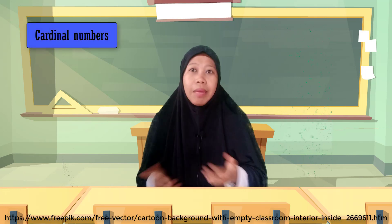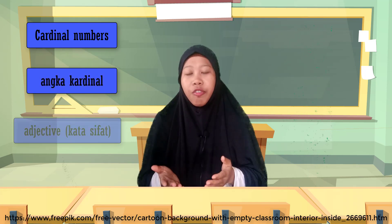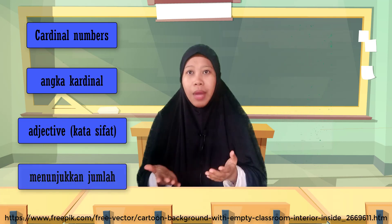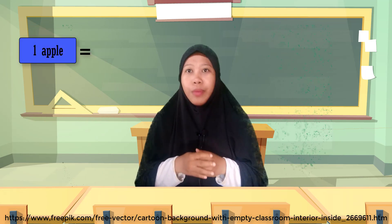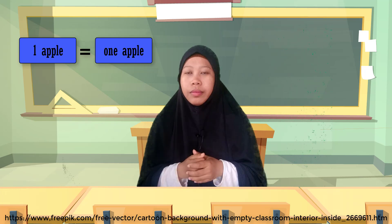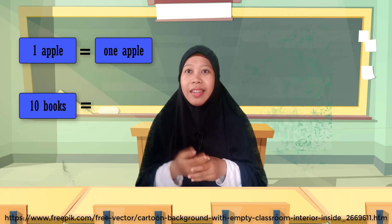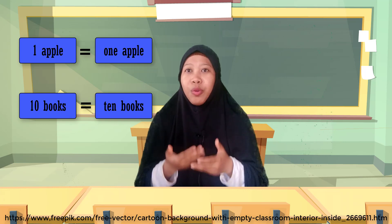Alright, everybody. Now let's see the difference between cardinal numbers and ordinal numbers. What is cardinal numbers? Cardinal numbers adalah adjective atau kata sifat yang menunjukkan jumlah. Contohnya, 'one apple' di mana menunjukkan satu adalah jumlah dari apple tersebut — satu buah apple. Or another example: 'ten books' means sepuluh buah buku.